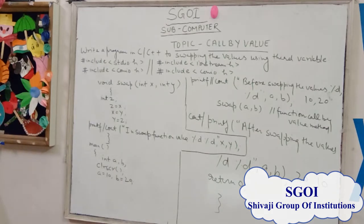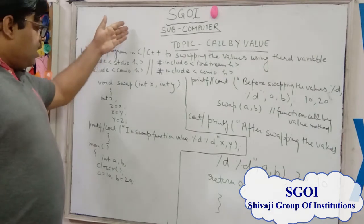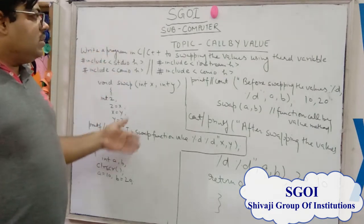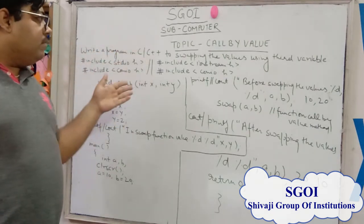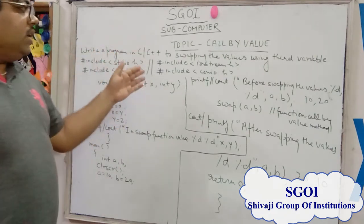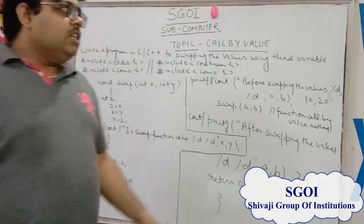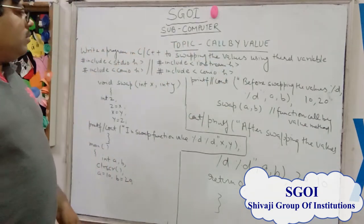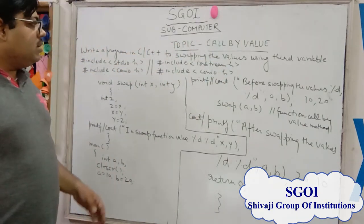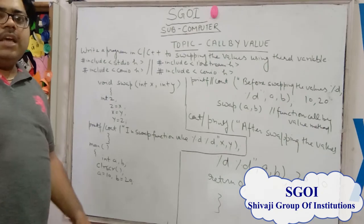This topic is now complete. Now you understand that we can also create a swap program without using a third variable. Thank you.